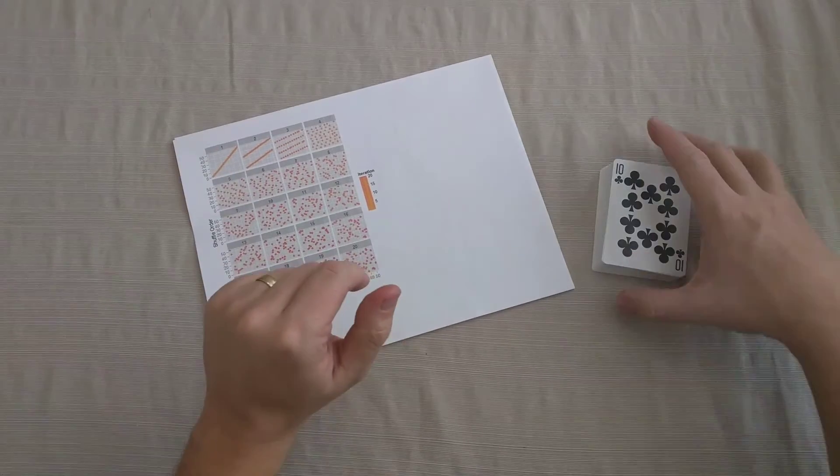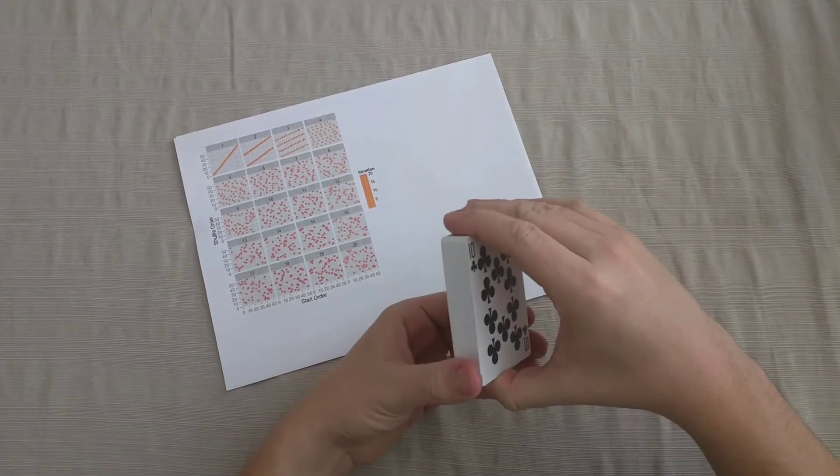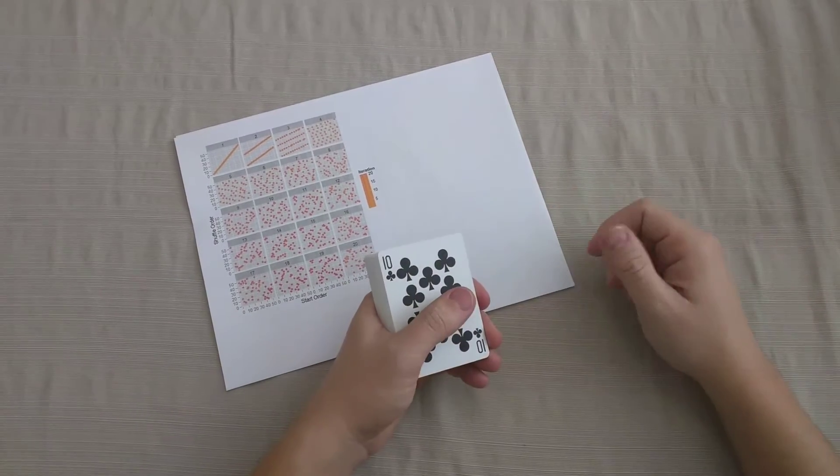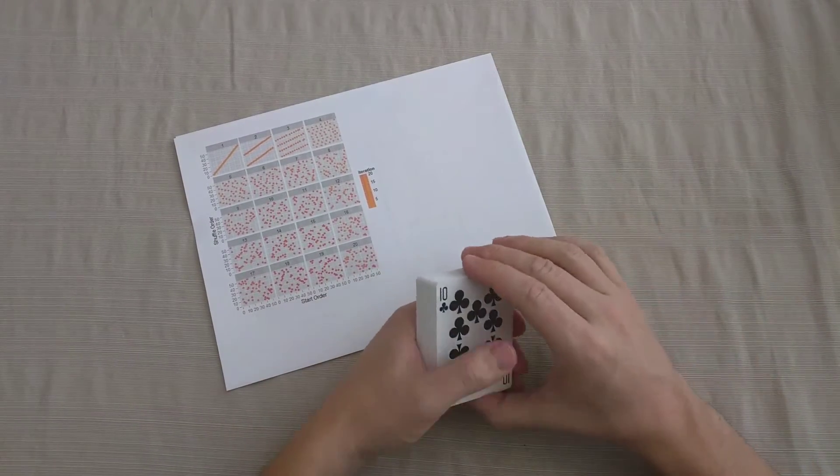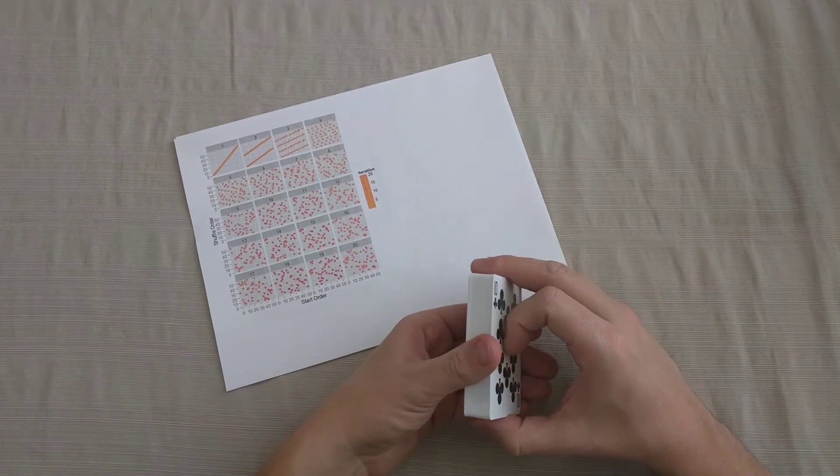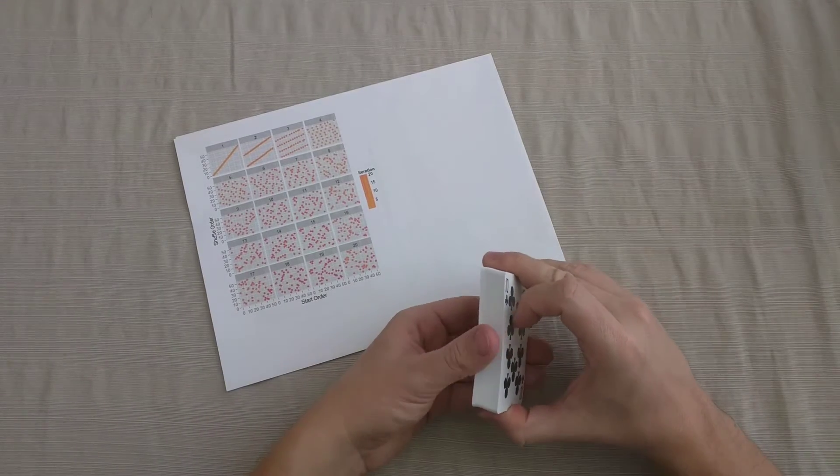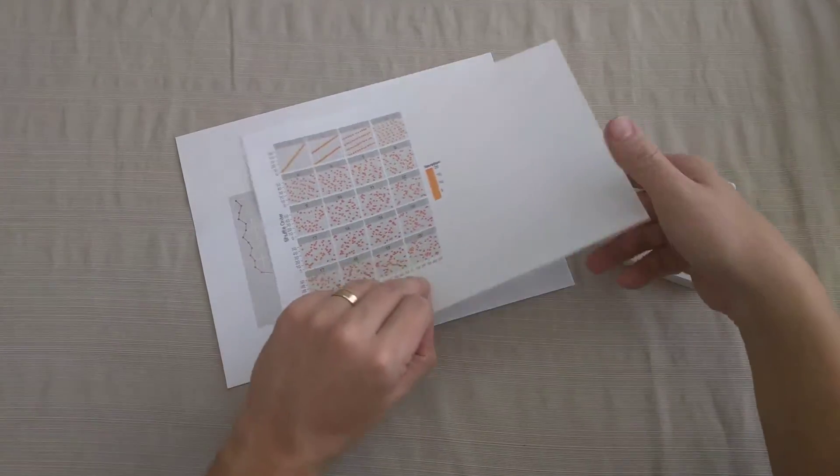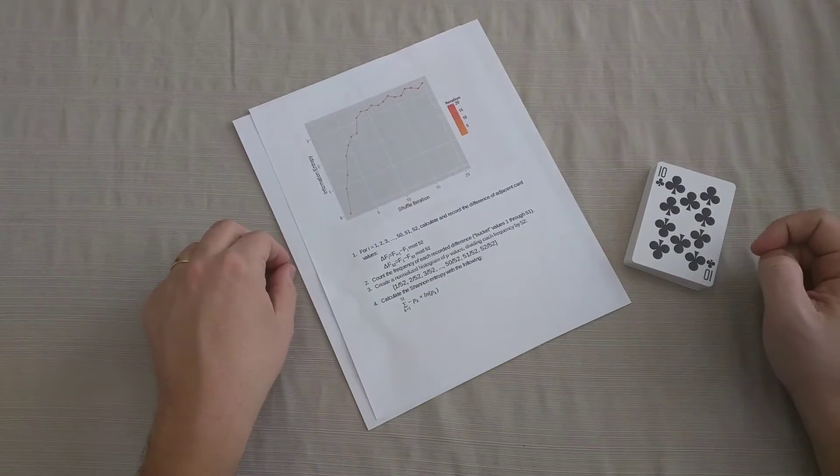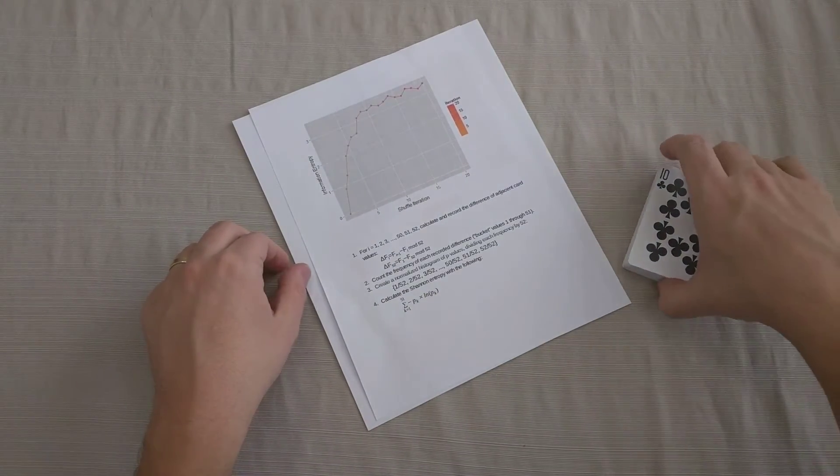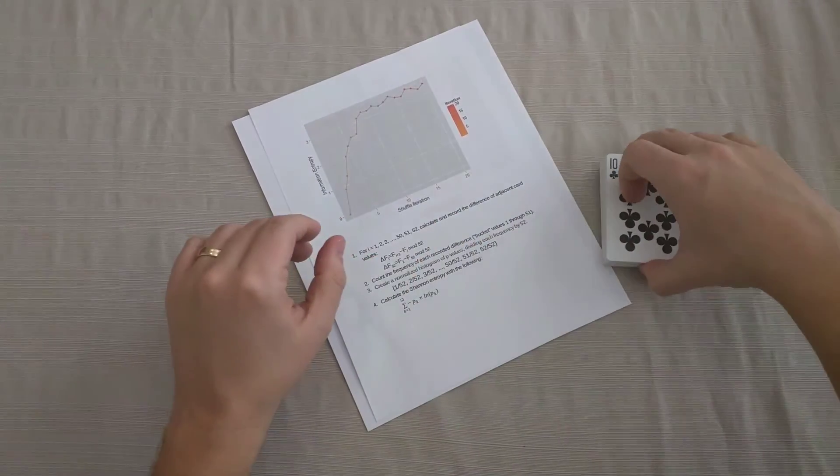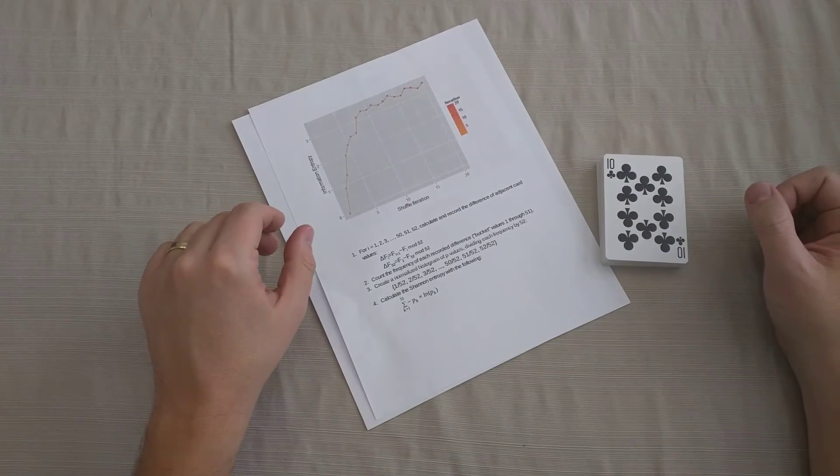Alright, so hopefully that answers your question. When keying your deck for your playing card cipher using what's called a riffle shuffle, you should do it roughly about 10 to 12 times to maximize the entropy or maximize the randomness in the deck. Additional shuffles past 12, as we have shown here, don't really get us any additional entropy. And so you're just putting in extra work for no real benefits. All right, so thanks for watching, and have a good day.